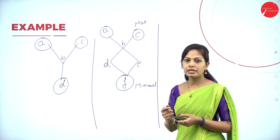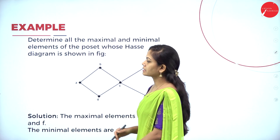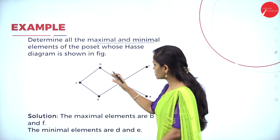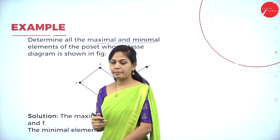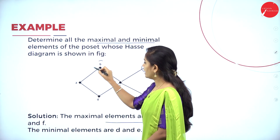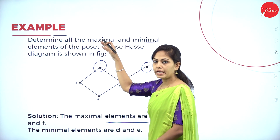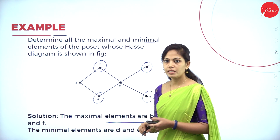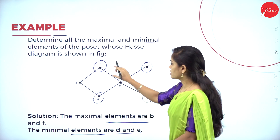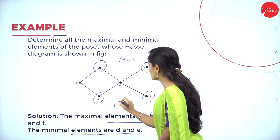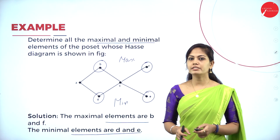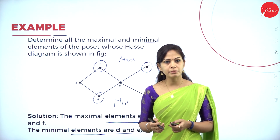In the next example, determine all maximal and minimal elements from the given Hasse diagram. The maximal elements are B and F — they are not related to any other element above them. The minimal elements are D and E — no element precedes them. You can write these examples for maximal and minimal elements.